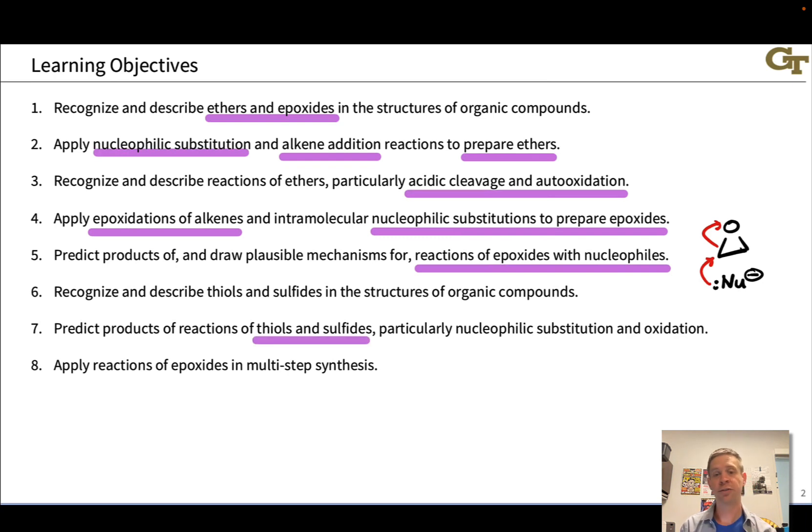We'll also discuss thiols and sulfides, and we'll learn to predict the products of reactions of thiols and sulfides. We've seen these to some extent previously, for example, thiolates as nucleophiles in SN2 reactions, but sulfur is also susceptible to oxidation, and we'll see examples of that in this unit. And then finally, we'll see how epoxides fit into multi-step synthesis, primarily as part of either an anti-dihydroxylation strategy or a synthetic strategy where we want to install a hydroxyl group or oxygen-containing functional group adjacent to some other heteroatomic functional group, which we can achieve through nucleophilic substitution ring opening of an epoxide.